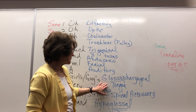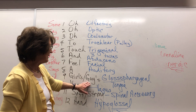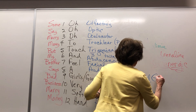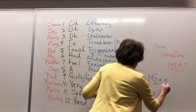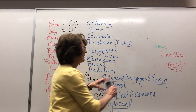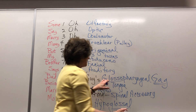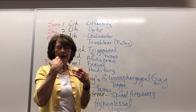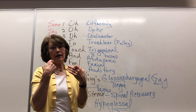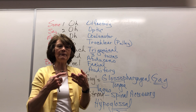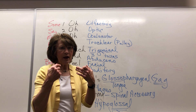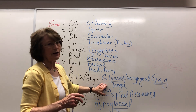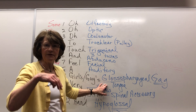Glossopharyngeal, the ninth nerve: this is the gag reflex — G and G. Put a tongue depressor back by their palatine tonsils; they should gag. If they do, it would be safe to give them something to eat. If they don't gag and it's not working, don't give them food or fluids, because this reflex is essential for safe swallowing.